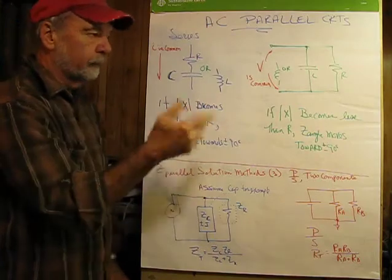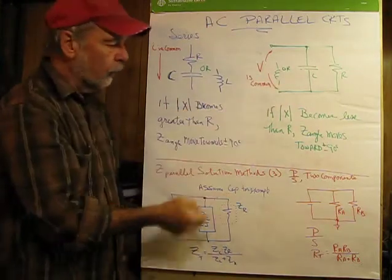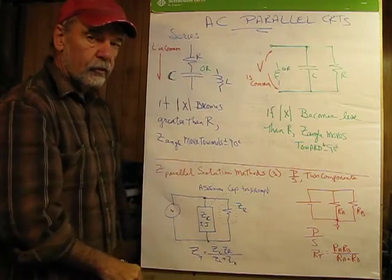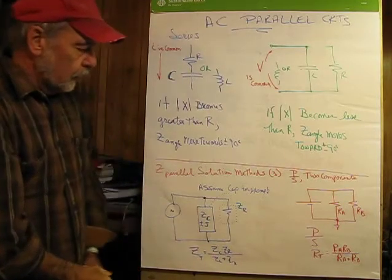In a parallel circuit, it's about current flow. In a series circuit, it's about the voltage drop across each one.